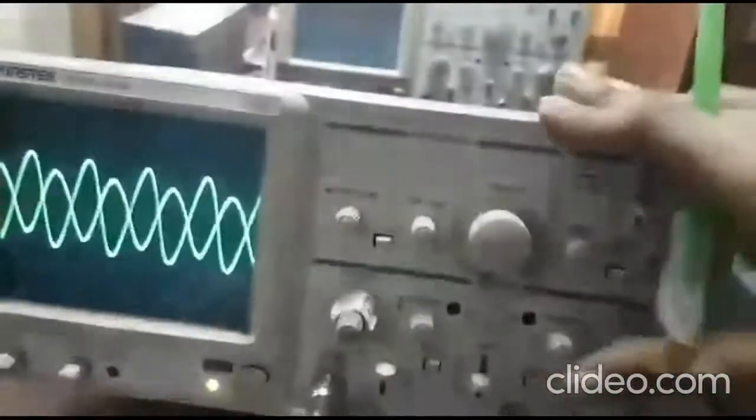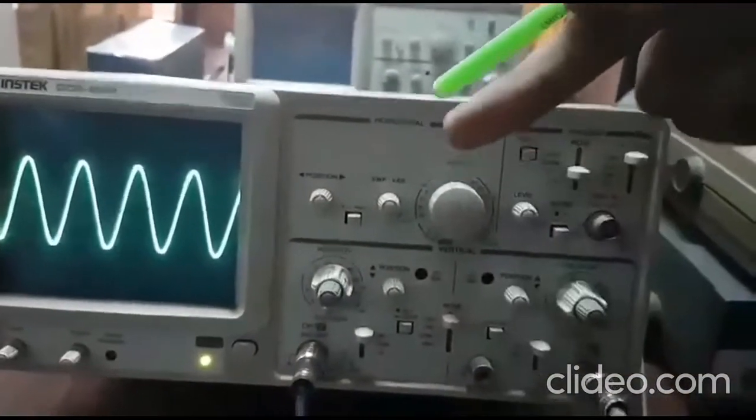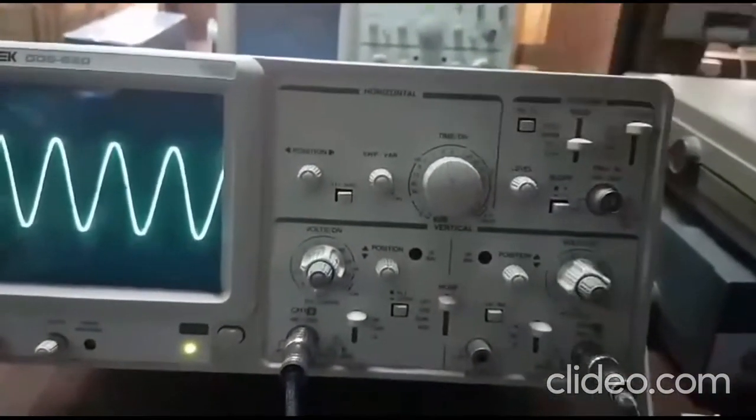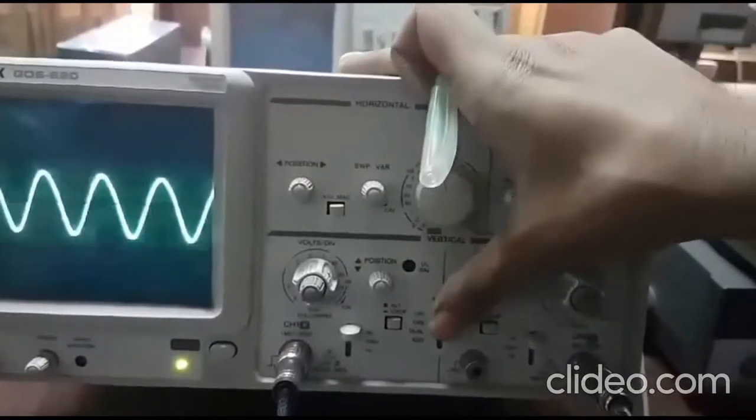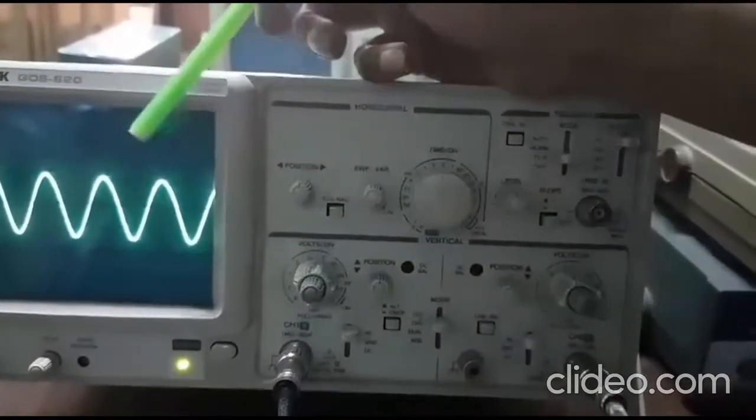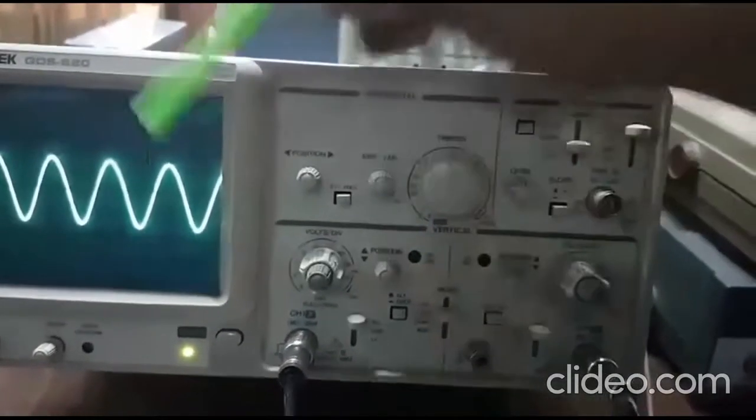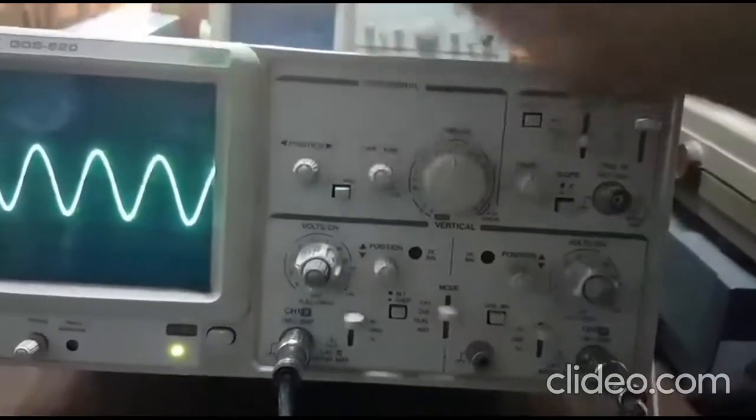So in the oscilloscope, we see this is our message signal, original message signal that we transmitted. And after filtering the demodulated wave, this is what we get. As we can see, there is almost no noise present. It's a very clean sine wave.